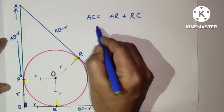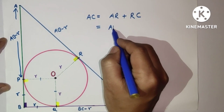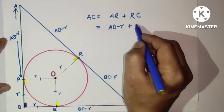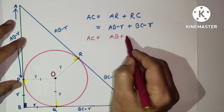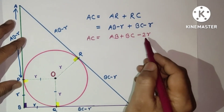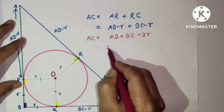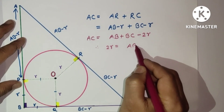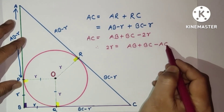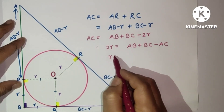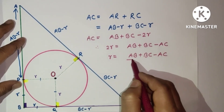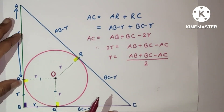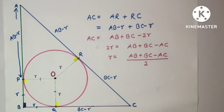Now, AC equals AR plus RC, so AC = (AB − r) + (BC − r), which gives AC = AB + BC − 2r. Rearranging: 2r = AB + BC − AC, and therefore r = (AB + BC − AC) / 2. So the inradius equals the sum of the legs minus the hypotenuse, divided by two. This is the result we will use.